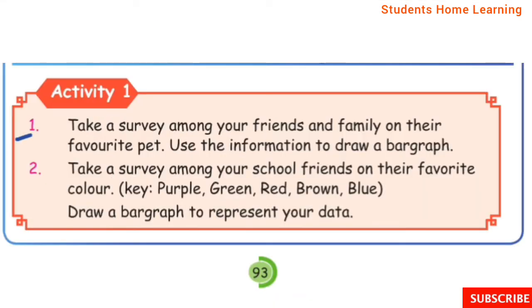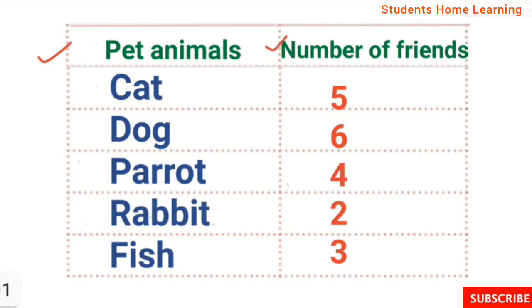Activity 1: Take a survey among your friends and family on their favourite pet. Use the information to draw a bar graph. Pet animals and number of friends: Cat 5, Dog 6, Parrot 4, Rabbit 2, Fish 3.